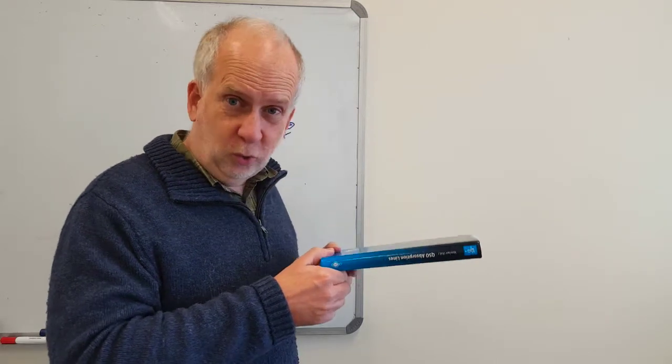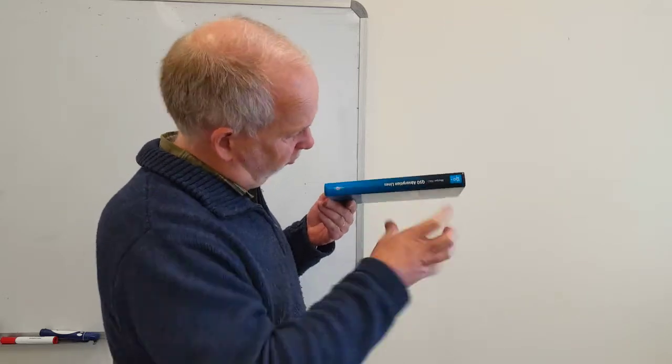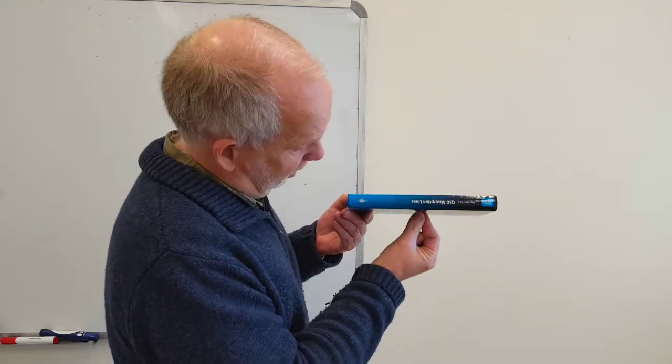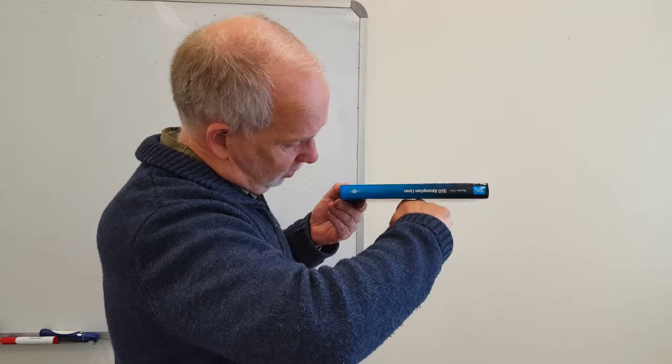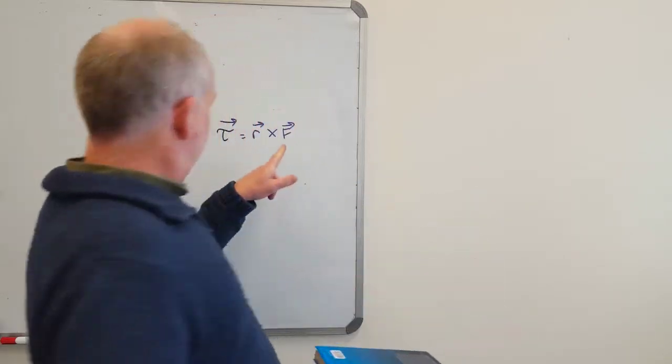Then you've got to work out where is the force. In this case the force is the weight which is acting on the centre of mass. The centre of mass is about here somewhere and the force is going to be a weight which is downwards like this. So that's the force vector.